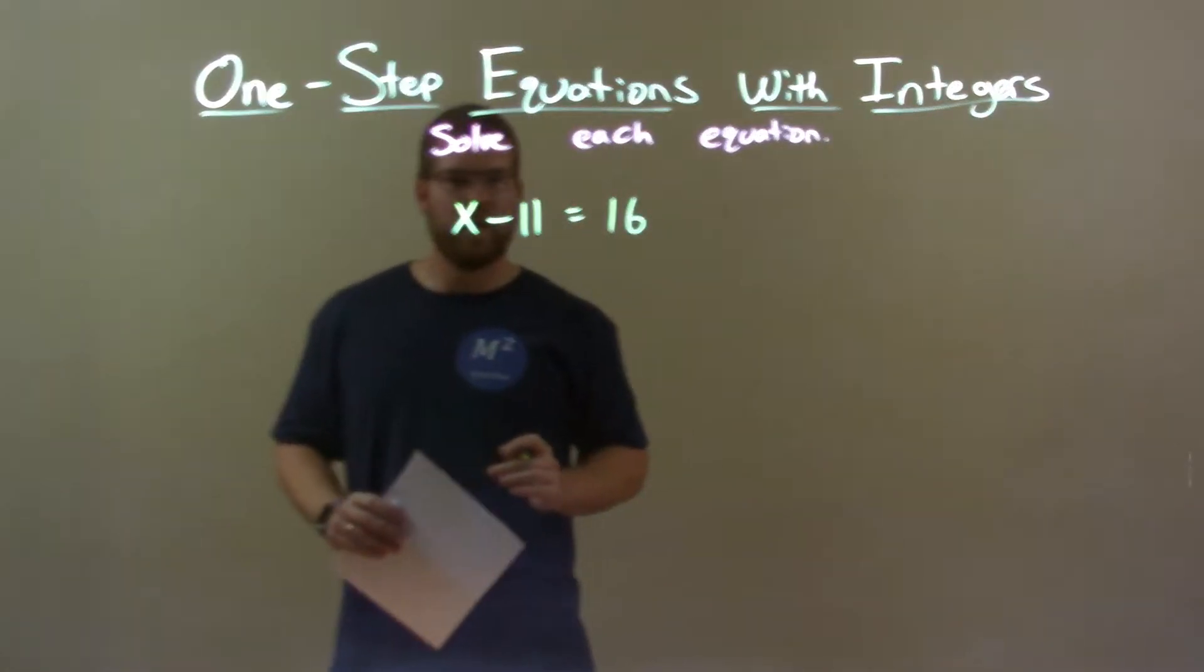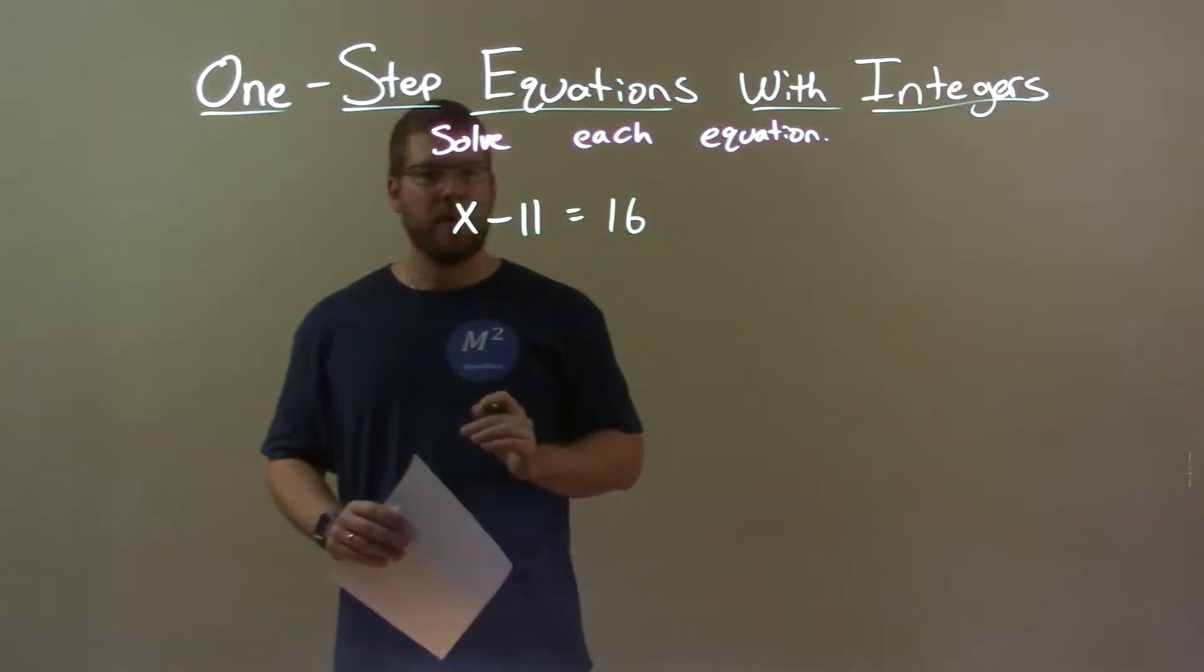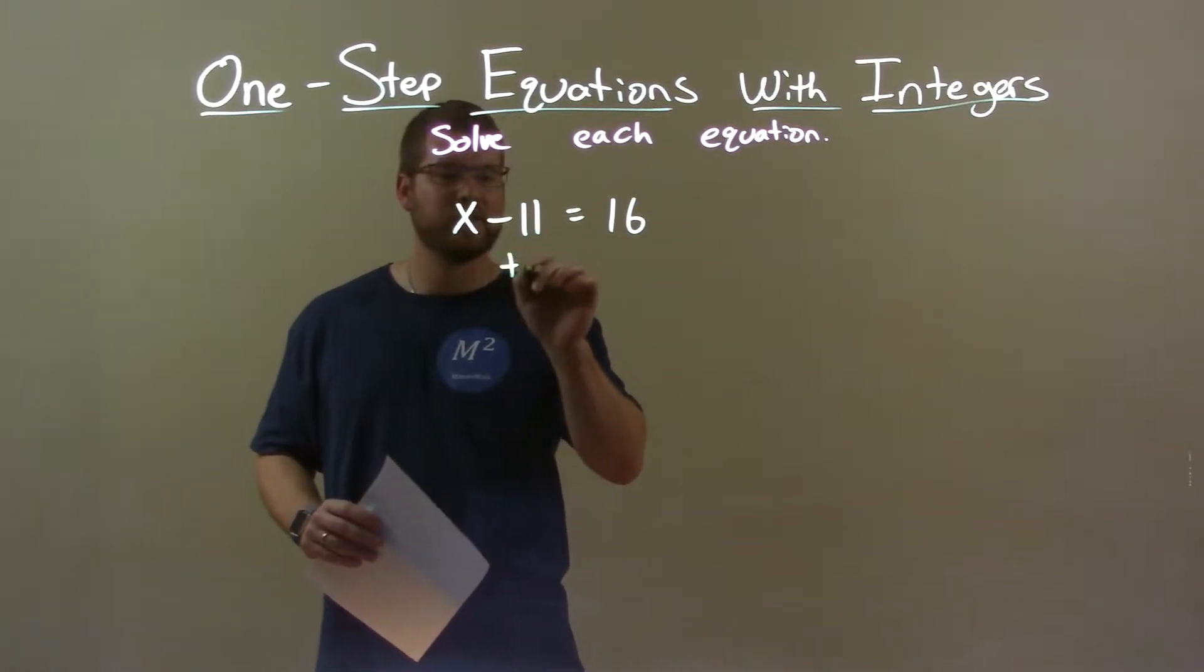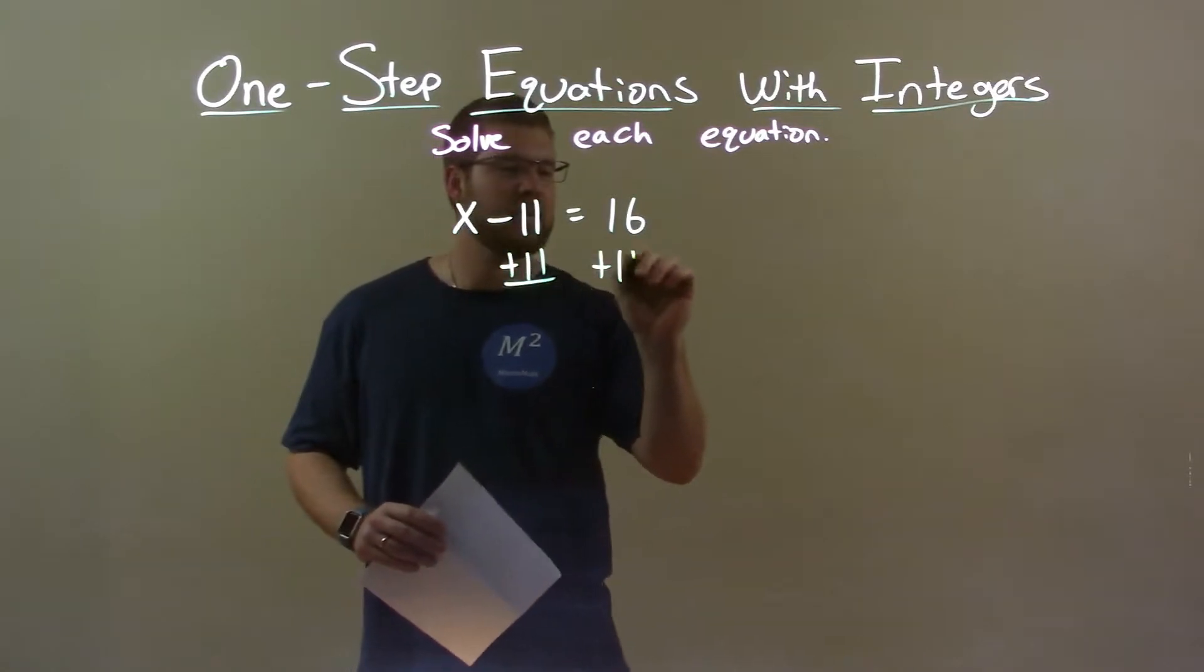I want to get x by itself. We have subtract 11 right next to it. To get x by itself, I could do the opposite of subtraction, addition. I add an 11 to both sides.